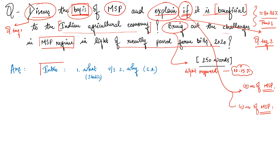The introduction can go two ways — static or current affairs-based. For example, you could mention the government recently hiking the MSP for the Rabi crop. However, since the question already asks for the basis, we can start simply with a one-liner on what MSP is and what its rationale was. There will be space constraints given how big the question is.